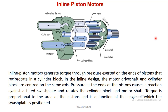Next is the inline piston motor. This is a simple picture of an inline piston motor. An inline piston motor generates torque through pressure exerted at the ends of pistons that reciprocate in a cylinder block. In the inline design, the motor drive shaft and the cylinder block are centered on the same axis. The pressure at the end of the piston causes a reaction against the tilted swash plate and rotates the cylinder block and the motor shaft. The torque is proportional to the area of the piston and is a function of the angle at which the swash plate is positioned.